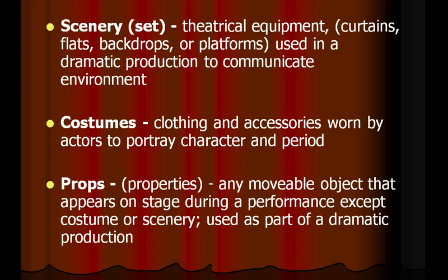Technical elements include scenery or set, including the theatrical equipment — curtains, flats, backdrops, or platforms used in a dramatic production to communicate environment. Costumes are clothing and accessories worn by actors to portray the character in period. Props, short for properties, are any movable objects that appear on stage during a performance, with the exception of costumes or scenery, used as part of the dramatic production.